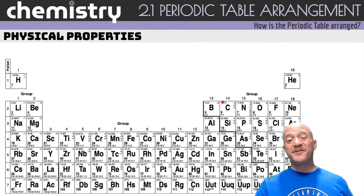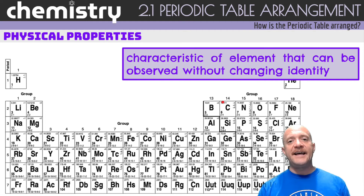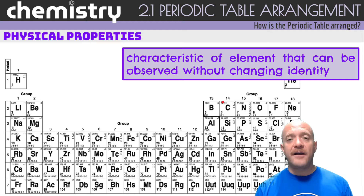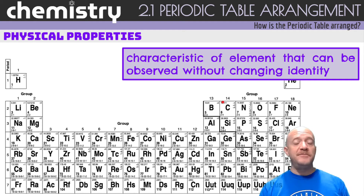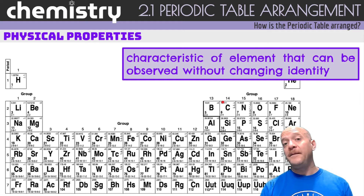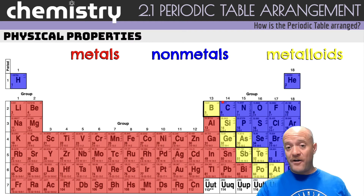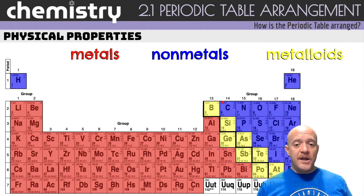We also have physical properties. A physical property is a characteristic of an element that can be observed without changing that element's identity — in other words, you're not causing a chemical reaction or changing it into something else. Physical properties can include boiling point, melting point, and others we'll discuss now.